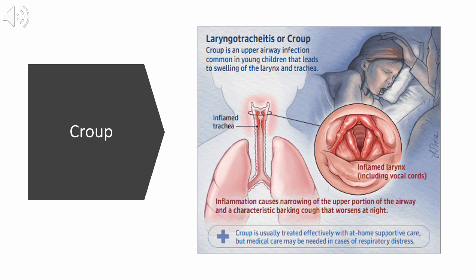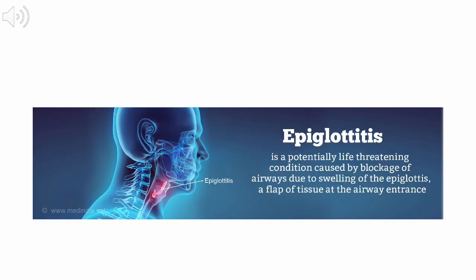The majority of children with croup can be treated at home, but some children who become very sick will need to go to hospital to be assessed by the medical team. Epiglottitis happens when the epiglottis — a small cartilage lid that covers the windpipe — swells, blocking the flow of air into the lungs. Epiglottitis can be deadly, and many factors can cause the epiglottis to swell, including infections, burns from hot liquids, and injuries to the throat.